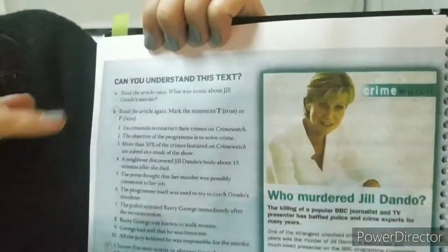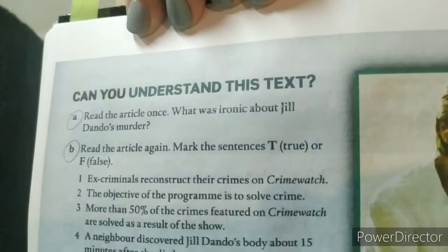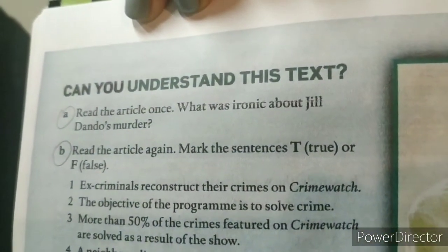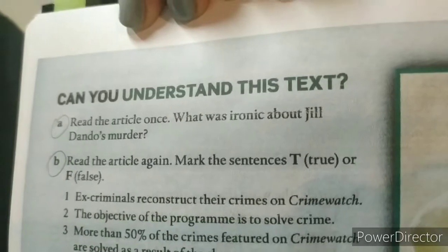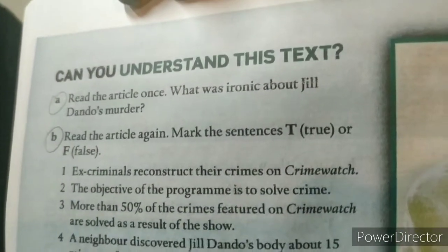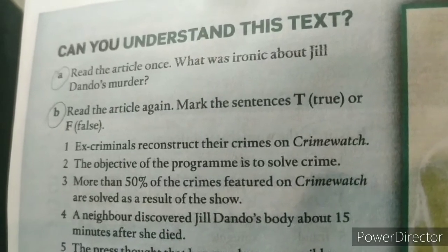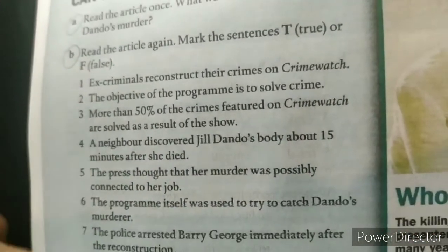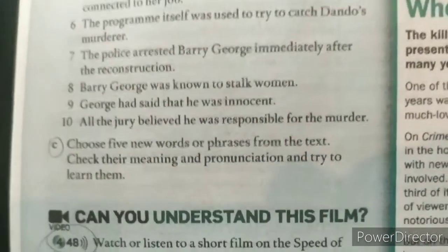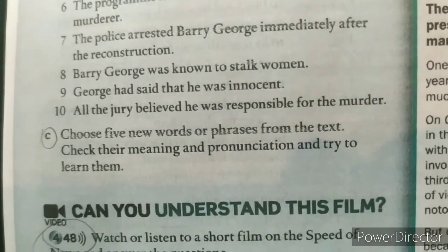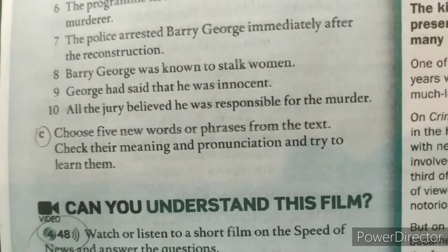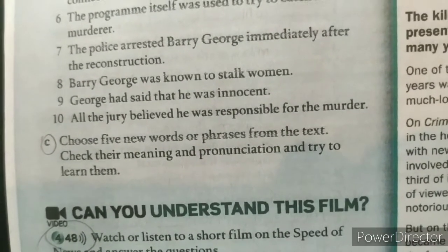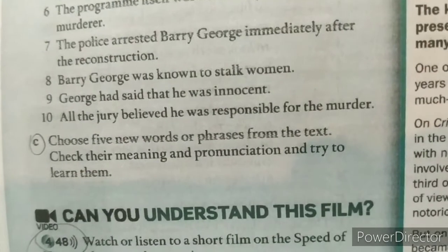So what do you have to do? Number one, letter A: read the article once — what is ironic about Jill Dando's murder? You have to answer just that question. Then B: read the article again and mark the sentences true or false. And then C: choose five new words or phrases from the text, check their meaning and pronunciation, and try to learn them. You choose words that are new for you — I really like this activity.